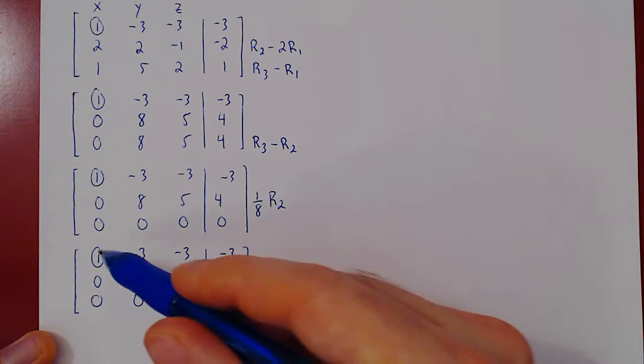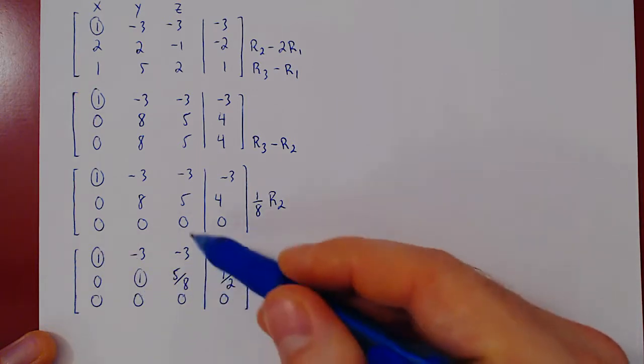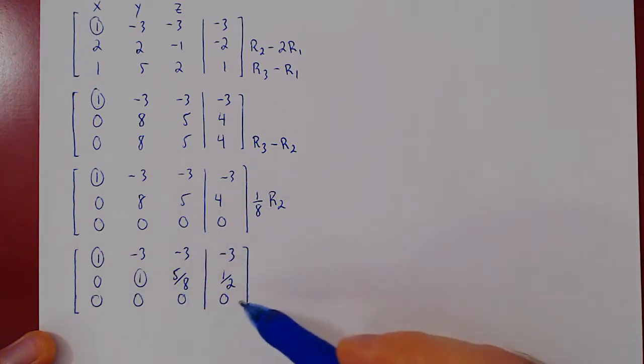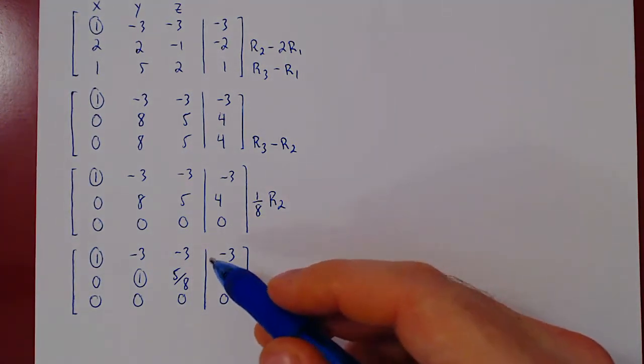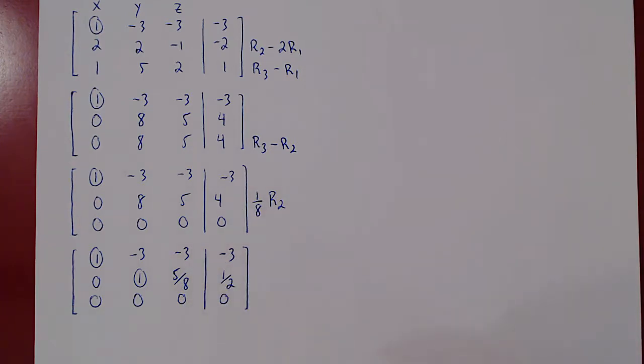So x and y will be leading variables, z will be a free variable. The system is consistent, therefore we have an infinite number of solutions. And because we have now a free variable in z, we will now use, instead of backwards substitution, we will use Gauss-Jordan elimination.